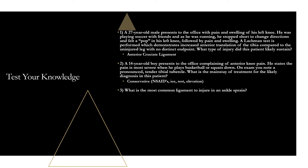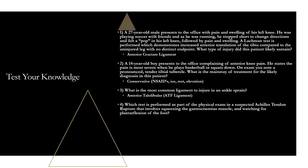Question 3: What is the most common ligament injured in an ankle sprain? Answer: anterior talofibular (ATF) ligament. Remember: ATF = always tears first. Question 4: Which test for suspected Achilles tendon rupture involves squeezing the gastrocnemius and watching for plantar flexion? Answer: Thompson test — squeeze the calf, positive if no plantar flexion occurs.